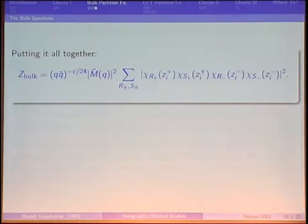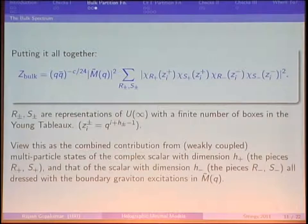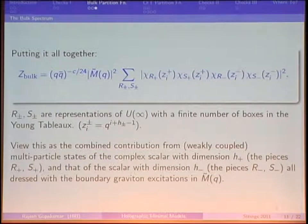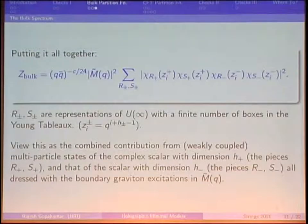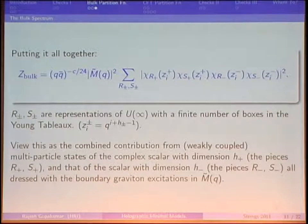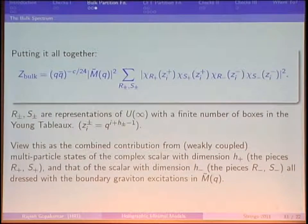Putting all these pieces together: there's a MacMahon function prefactor common to everything, and then a sum over representations — those with a finite number of boxes in the Young tableau — with the associated chemical potentials. This can be viewed as the contribution from non-interacting multi-particle states of the two complex scalars, with the piece from the scalar of dimension H+ and the piece from the scalar of dimension H−, and then the mod-square of the whole thing. The generalized Brown-Henneaux-like gravitons are all in the MacMahon function.